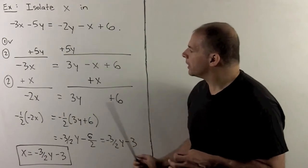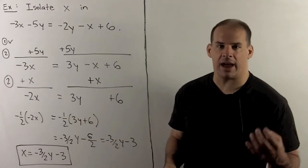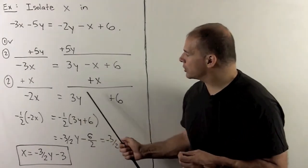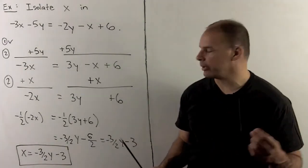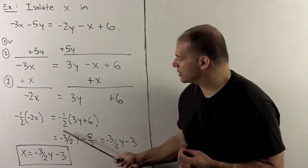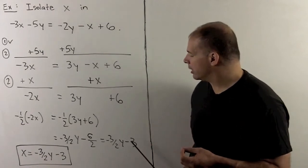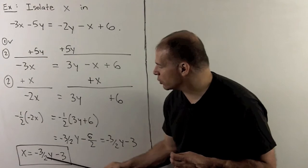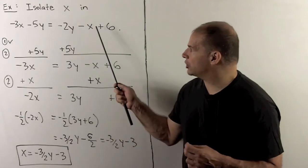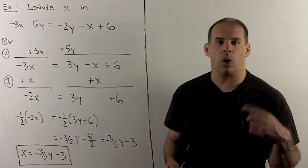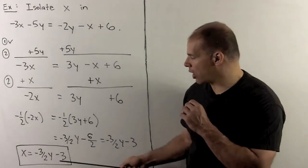There's nothing to simplify, so we go to our last step. I want to get rid of minus 2x, so we multiply by minus a half. The 3y + 6 is in parentheses, so I distribute minus one-half to each term: minus one-half times 3y is minus 3/2 y, and minus one-half times 6 is minus 3. So our final answer is x = -3/2 y - 3. To check, we'd substitute this expression back in for x in the original equation — but we'll skip that, as we'll have better checks when we do lines.